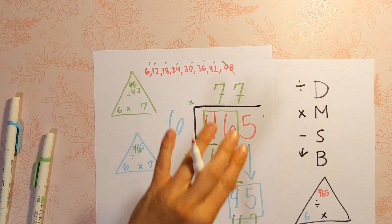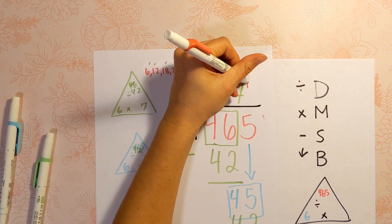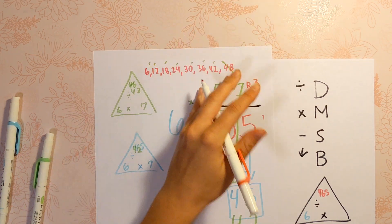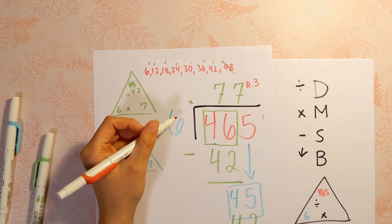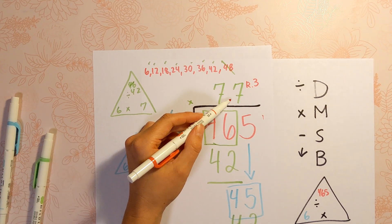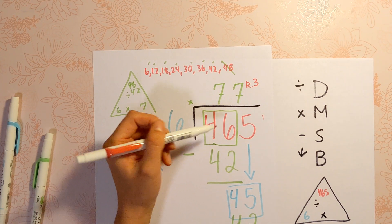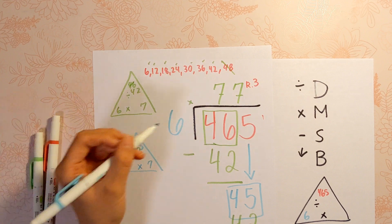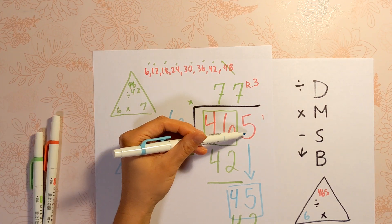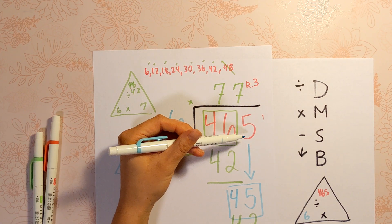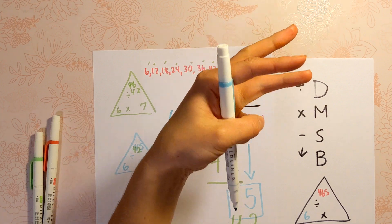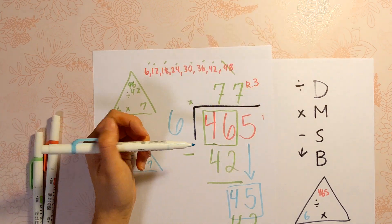Our answer is 77 remainder 3. What that means is 6 times 77 does not equal 465. You're going to get 462. Then 463, 464, 465 — there are 3 left over.